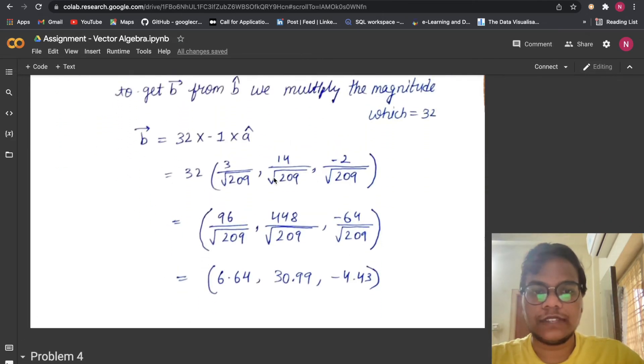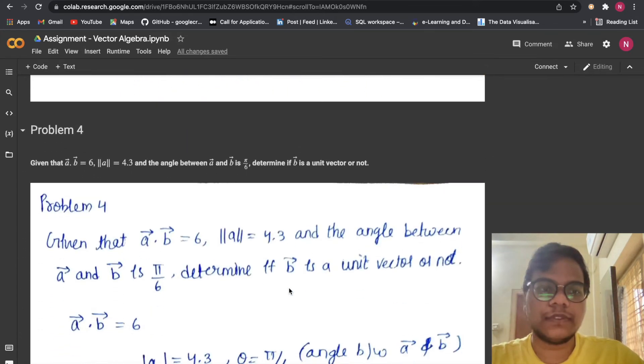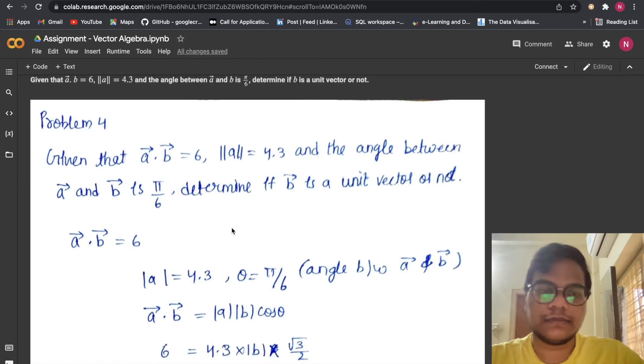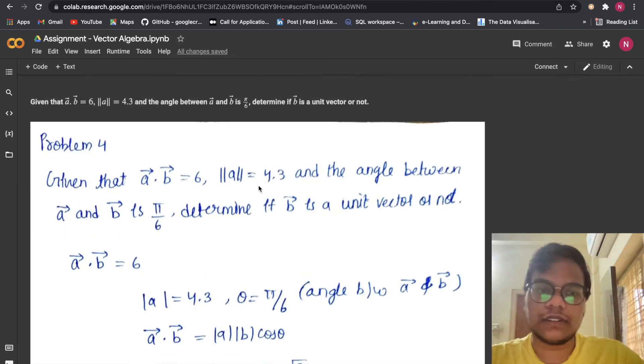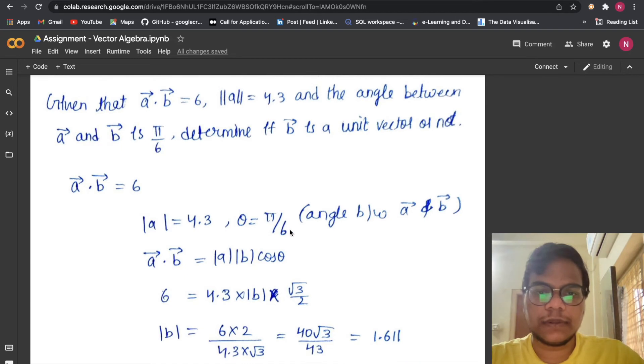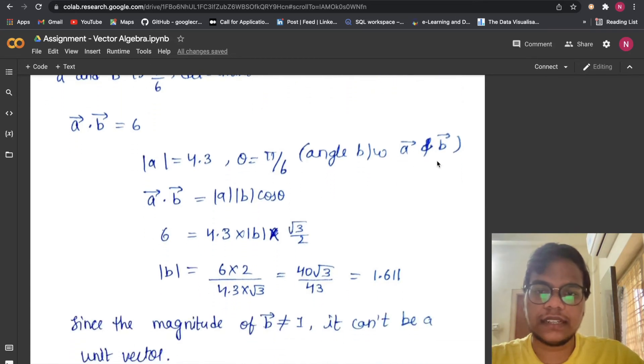Now we are moving to Problem 4: Given that ā · b̄ = 6, |a| = 4.3, and the angle between ā and b̄ is π/6, determine if b̄ is a unit vector or not. So ā · b̄ = 6, |a| = 4.3, θ = π/6, the angle between a and b...